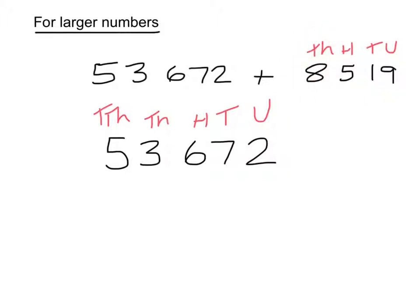The 1000, the 8, that must be written here under the 3. The 5 must be in the 100's column, the 1 must be in the 10's column and the 9 units must be in the units column.